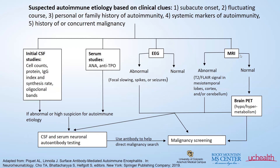Your MRI of the brain looks for any signs of encephalitis, often affecting what we call the mesiotemporal lobe, which is a part of your limbic system. If your spinal fluid studies or your serum studies show evidence of inflammation, we move on very quickly to look for specific autoantibodies, both in the spinal fluid and in the blood. If your EEG shows these abnormalities that can help, and if the MRI is normal — which happens a decent percentage of the time — sometimes in certain circumstances, further imaging with a brain PET scan can be helpful.